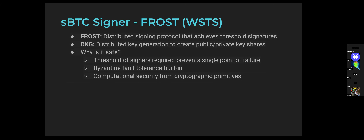FROST is the distributed signing protocol that handles threshold signatures. There's a great white paper produced specifically about the FROST protocol if you want to understand the cryptographic primitives. The DKG process — distributed key generation — creates the key shares used by individual nodes. The key point is that this provides Byzantine fault tolerance: you have protection from individual nodes acting nefariously or failing entirely, and the system can still move forward and recover.